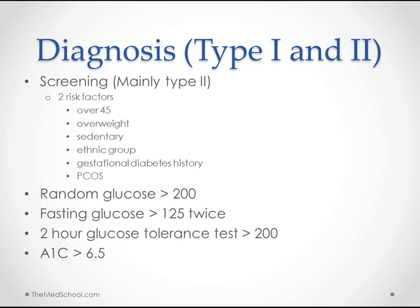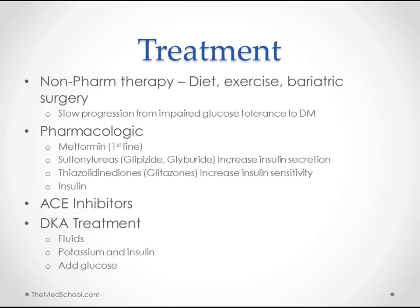The diagnosis is made by any random glucose over 200, or two fasting glucoses over 125. A lot of times you'll just be ordering a complete metabolic panel that includes fasting glucose. If you see one over 100, you might run a two-hour glucose tolerance test or an A1C. The hemoglobin A1C over 6.5 was accepted in 2009 as an acceptable screening and diagnostic tool for type 2 diabetes. This is important so we can start treatment and prevent the bad outcomes of diabetes.